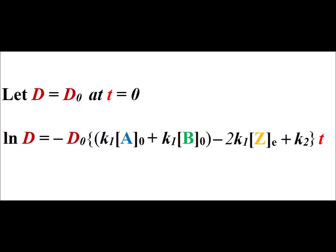For our initial condition, the initial difference between the concentration of z and its equilibrium concentration, D, is said to be D sub zero at time t equals zero. Then we make use of the fact that we can solve the differential equation that we have, and we get this expression for the natural log of D at some particular time t.